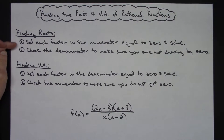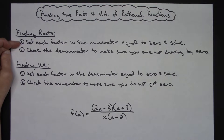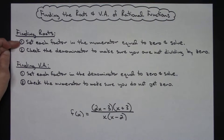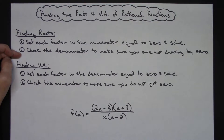I've outlined some steps here. When you're going to find your roots, you're going to set each factor in the numerator equal to zero and solve, and then you're going to want to make sure and check that in the denominator to make sure that you're not dividing by zero.